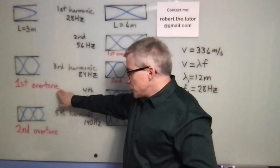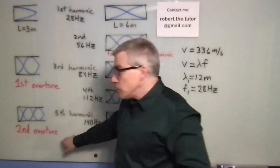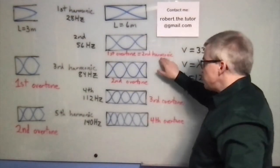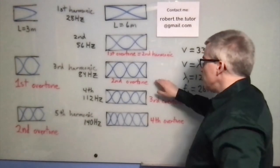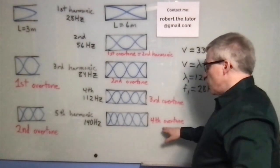So this would be the first overtone and the second overtone. Whereas this, the second harmonic is the first overtone, the third harmonic is the second overtone, and so forth.